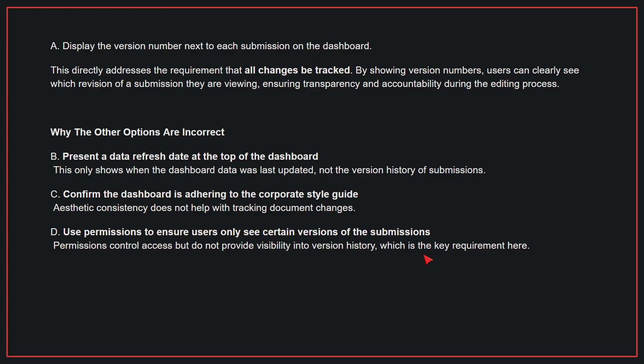By showing version numbers, users can clearly see which revision of a submission they are viewing, ensuring transparency and accountability during the editing process. Why the other options are incorrect? B: Present a data refresh rate at the top of the dashboard. This only shows when the dashboard data was last updated, not the version history of submissions. C: Confirm the dashboard is adhering to the corporate style guide. Aesthetic consistency does not help with tracking document changes. D: Use permissions to ensure users only see certain versions of the submissions. Permissions control access but do not provide visibility into version history, which is the key requirement here. Therefore, the correct answer is A.